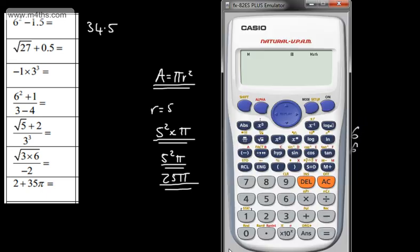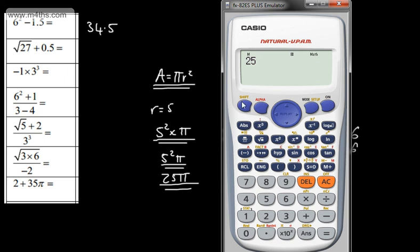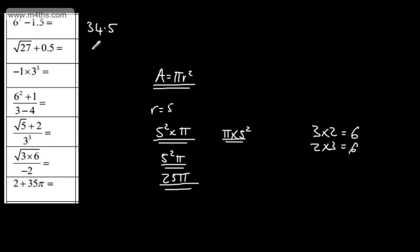So if we wanted to do that in the calculator, we could simply do 25 shift pi and that would give us that answer which is about 78. So basic use of a Casio calculator with some more complicated calculations to make.